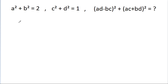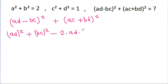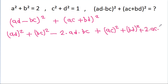So, we have to find the value of (ad minus bc) square plus (ac plus bd) square. And (ad minus bc) square is ad square plus bc square minus 2 times ad into bc, plus (ac plus bd) square will be ac square plus bd square plus 2 times ac into bd.